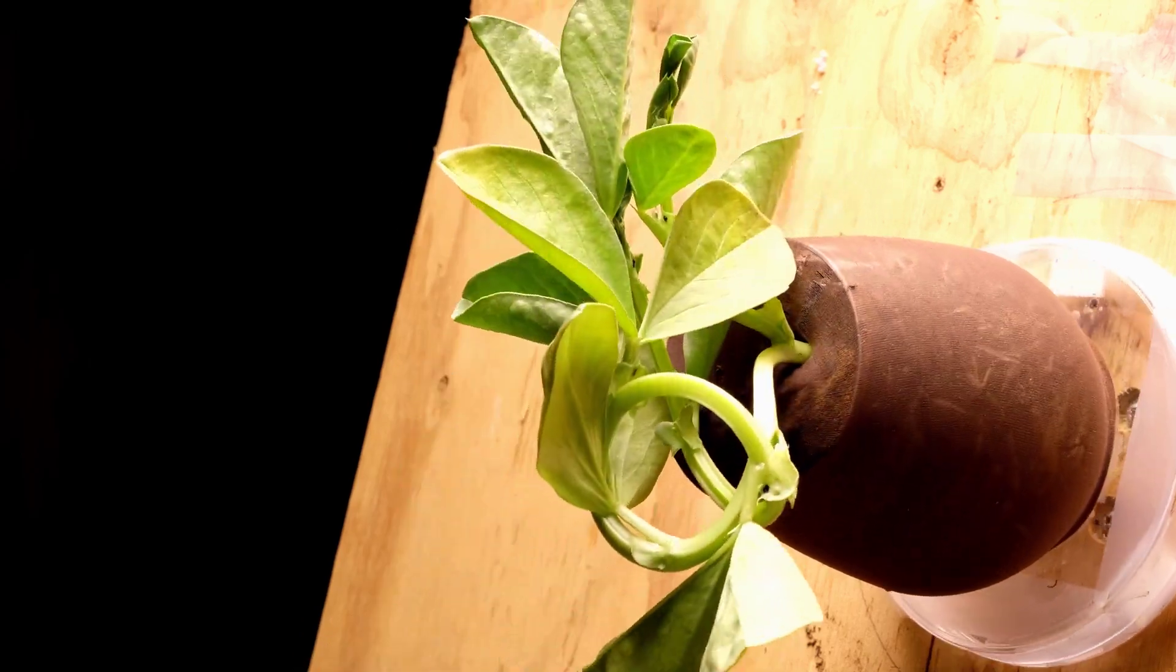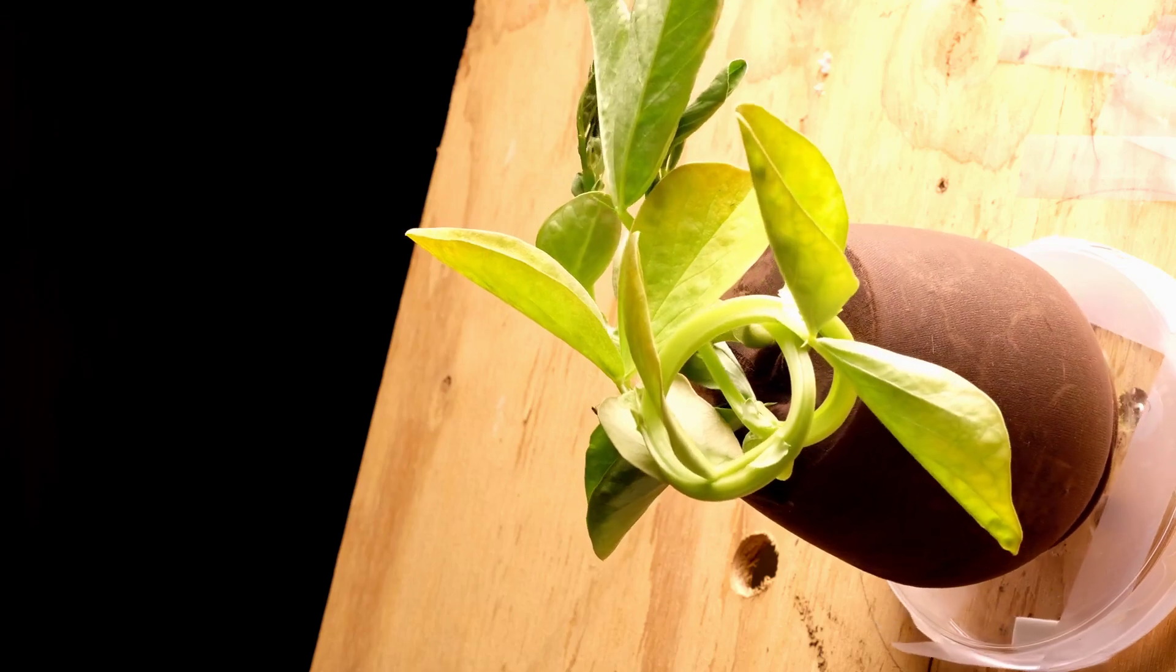By rotating the plant on a platform, it will continue bending and growing upwards, spiraling repeatedly.